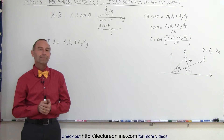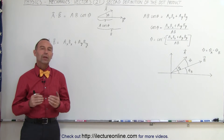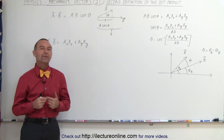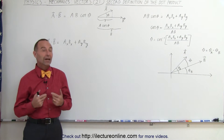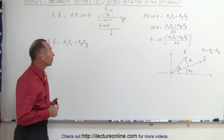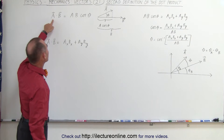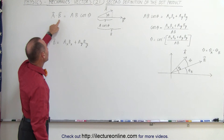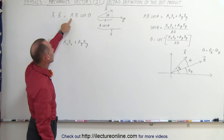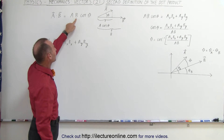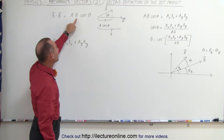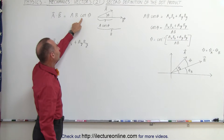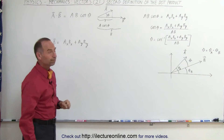Welcome to Electronline. We know that there are two definitions for the dot product. The first definition most of us are familiar with: A dot B, the dot product between two vectors A and B, is equal to the magnitude of A times the magnitude of B times the cosine of the angle between the two.